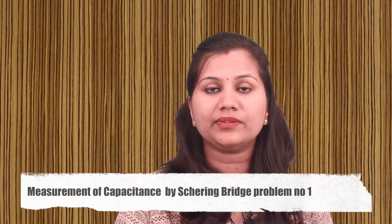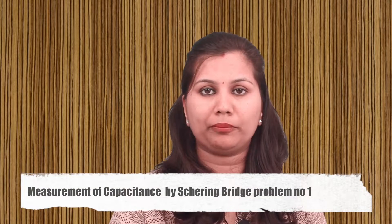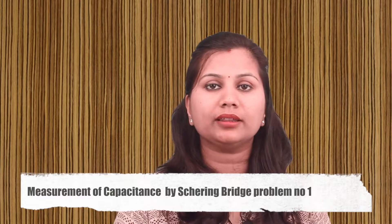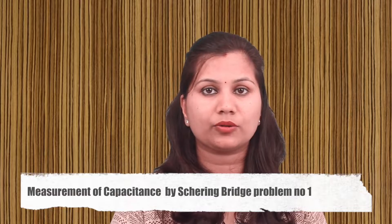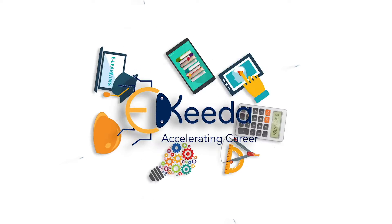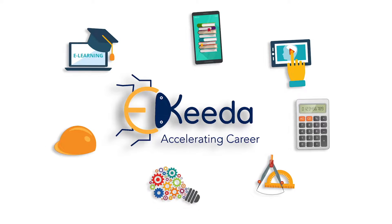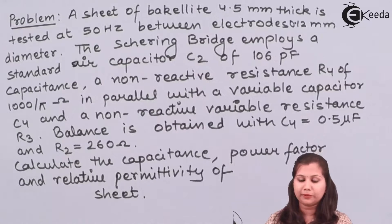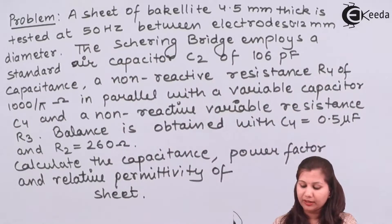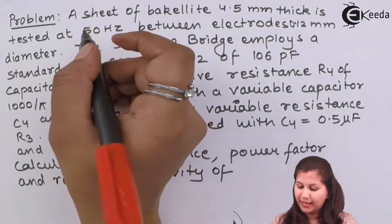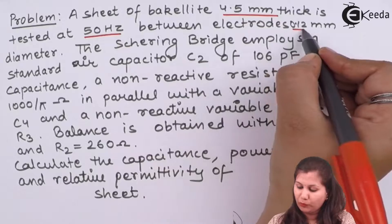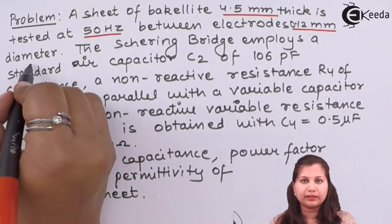Hello friends. In this video we are going to solve a problem based on the measurement of capacitance using the Schering bridge. Our problem is: we are given a sheet of Bakelite 4.5 mm thick, and this sheet is tested at 50 Hz frequency, between the electrodes which are 0.12 m in diameter.